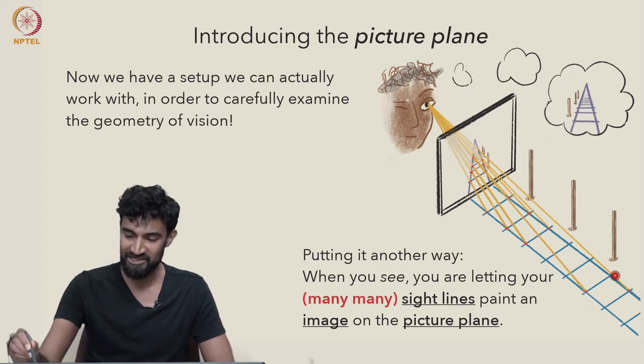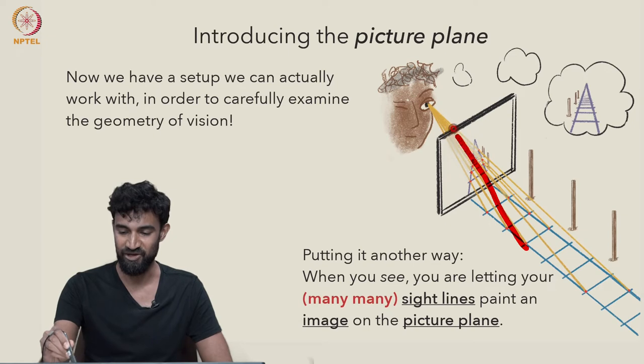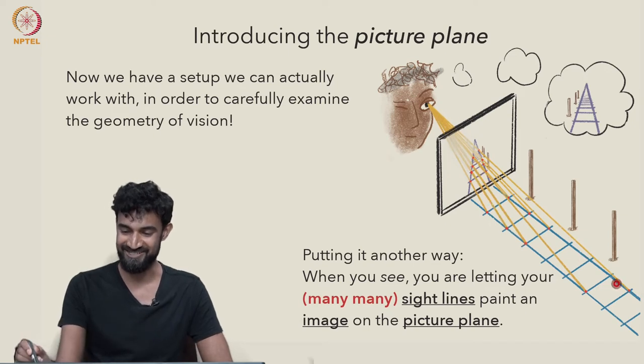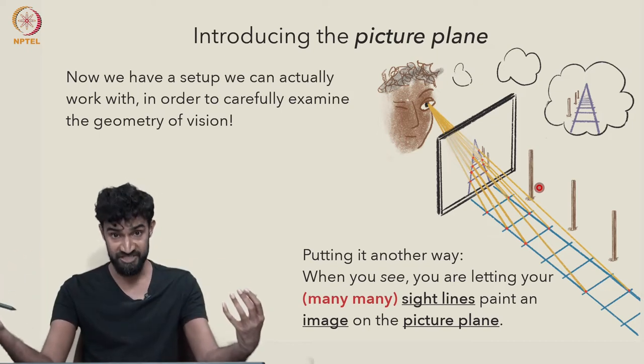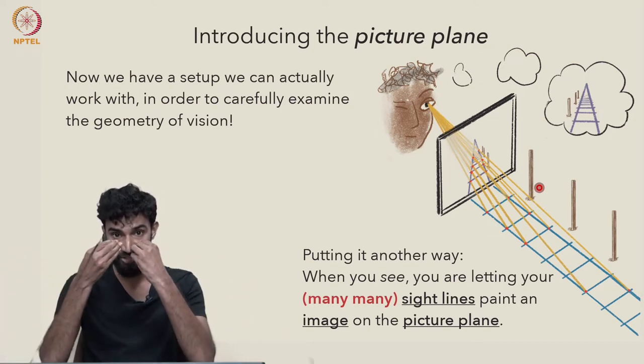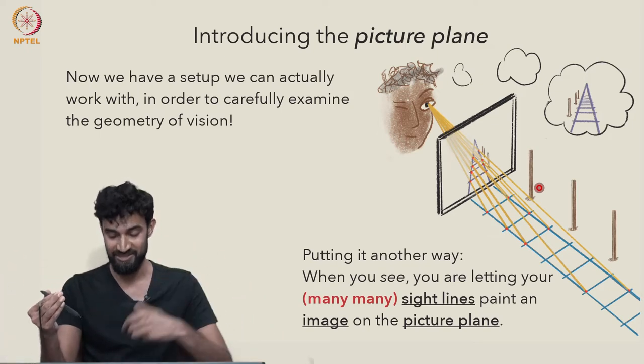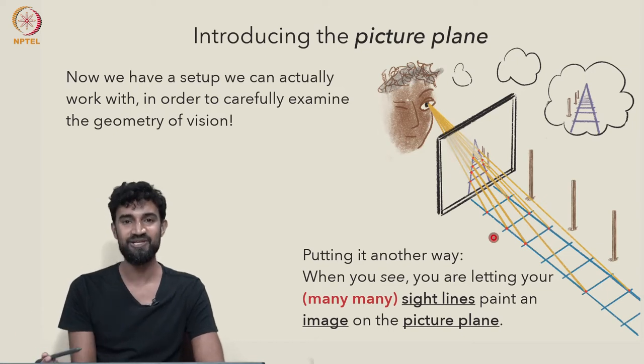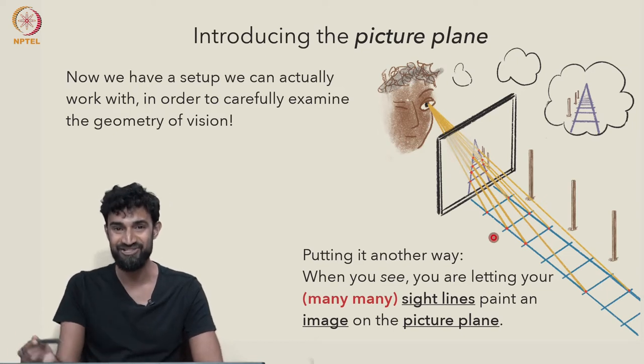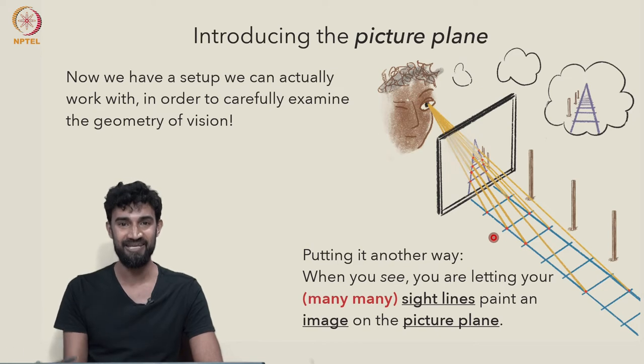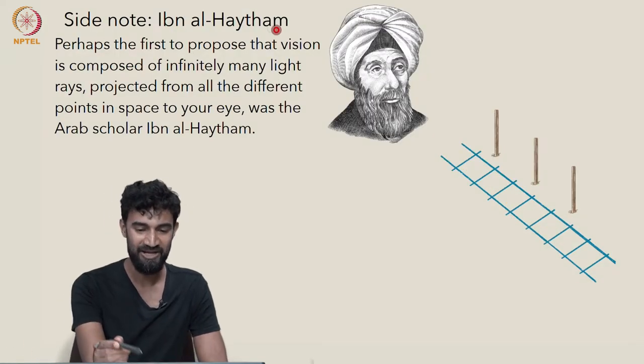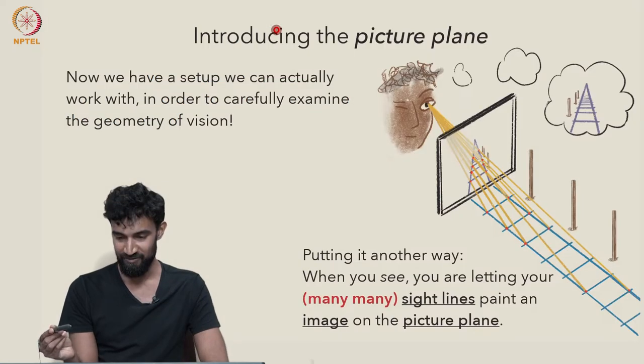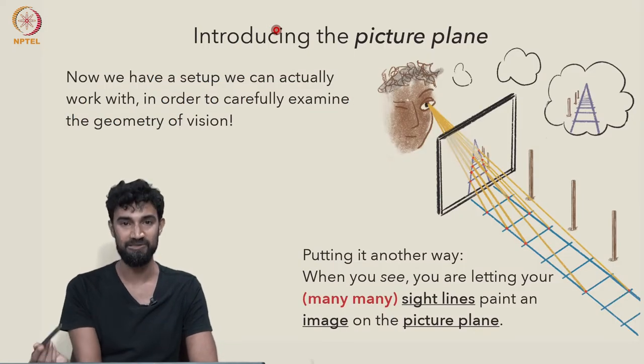But one thing to notice is that this setup actually does feel kind of mind-boggling when you think about it. There's so many light rays, not just the ten that I've drawn here. Light rays from every single point in space bouncing off into your eye at every moment, at every instant. So it's a completely mind-boggling, unimaginable amount of data that you're taking in and processing all the time. And maybe that's one reason why it took so long to develop this model of vision.